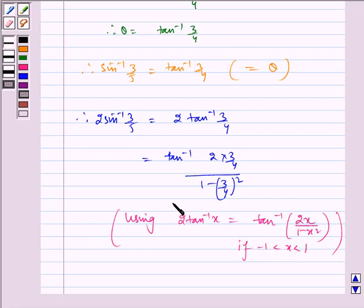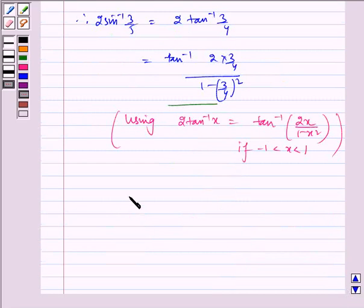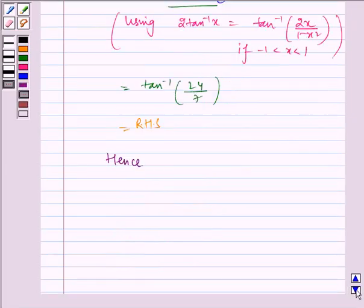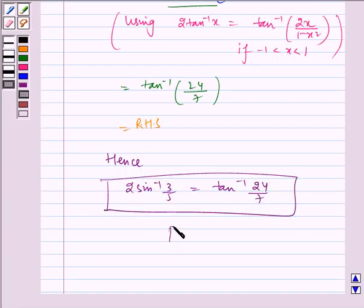Now this is equal to tan inverse of 24 by 7, which is equal to RHS. Hence 2 sin inverse of 3 by 5 is equal to tan inverse of 24 by 7. Proved.